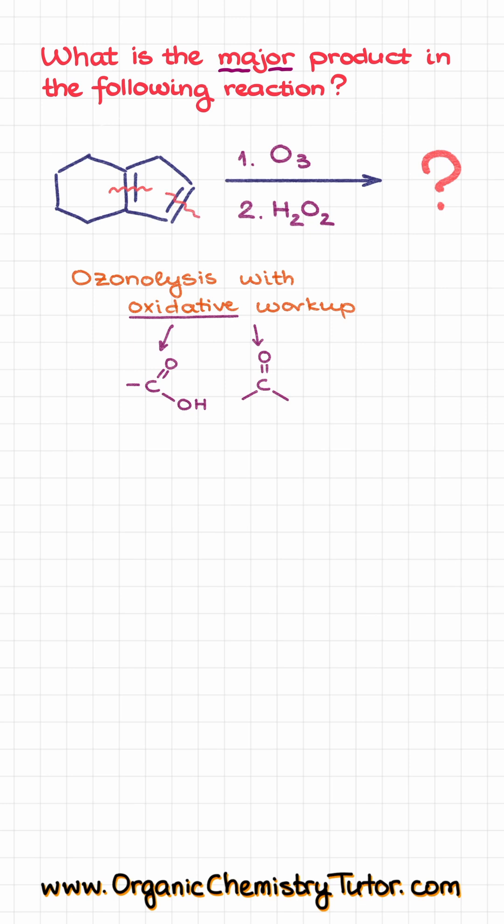So, overall, we are going to end up with a 1, 2, 3, 4, 5, 6, 7, 8, 9-carbon chain where this carbon and this carbon are going to bear the carboxylic acid functional groups and these two are going to be our ketones.